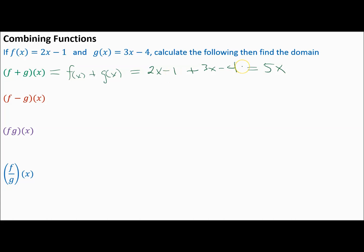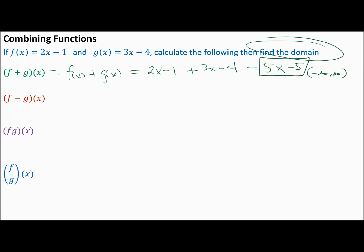Negative 1 plus negative 4 is negative 5. The domain — since this is a polynomial function and each of these are separate polynomial functions — is negative infinity to infinity. So the answer to F plus G of X is 5x minus 5, and the domain is negative infinity to infinity.